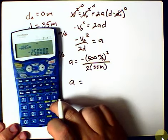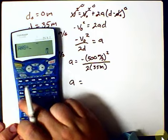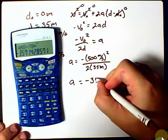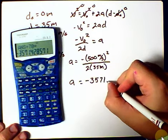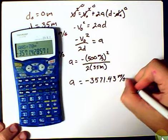And I'm going to divide that by 2 times 35, which is 70, so I have negative 3,571.43 meters per second squared.